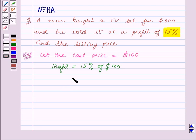This is equal to 15 upon 100 into $100. Zeros get cancelled and this is equal to $15.